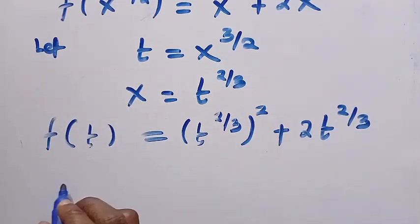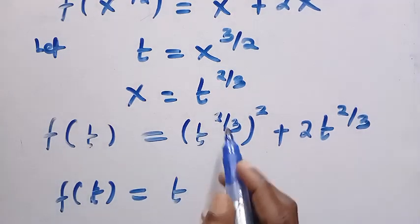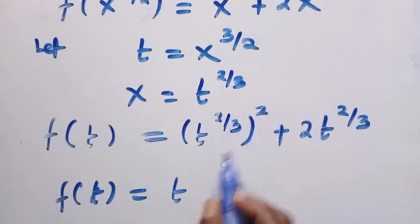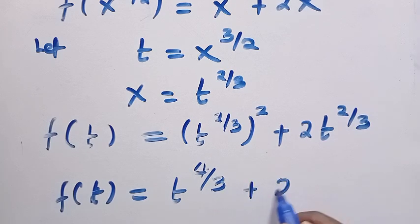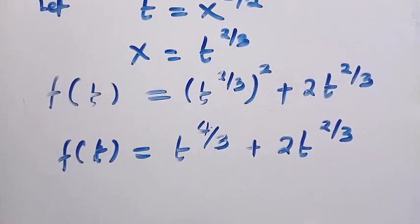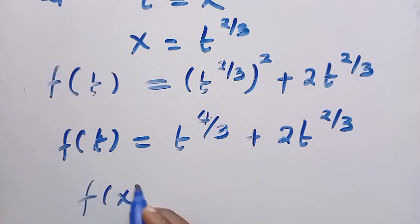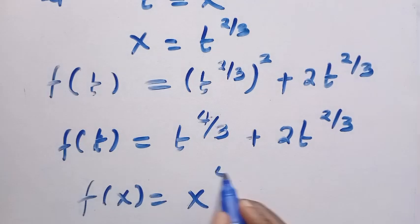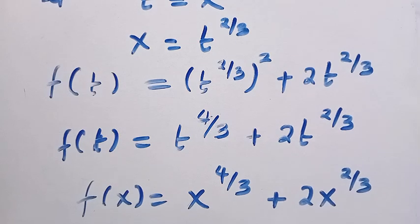After simplifying, we have f of t equals t raised to the power of 4 over 3 plus 2t raised to the power of 2 over 3. Changing every t back to x, we get f of x equals x raised to the power of 4 over 3 plus 2x raised to the power of 2 over 3. This is the answer for f of x.